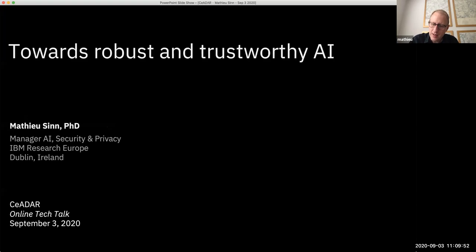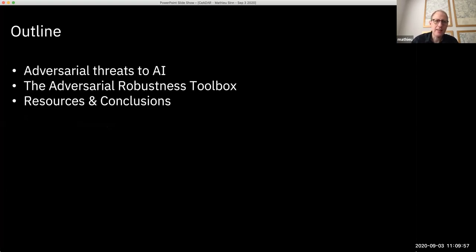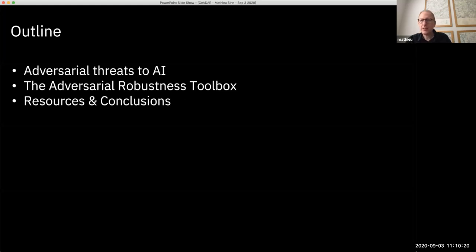What I would like to talk about in this presentation, 'Towards Robust and Trustworthy AI,' is first, outline what are emerging adversarial threats to AI, which are interesting because they also tell us something about how AI and deep learning in particular is working. Then I will speak about an open source project that we started in the space, the Adversarial Robustness Toolbox, and conclude with some resources that might be of interest to those of you who would like to dive deeper into this topic.